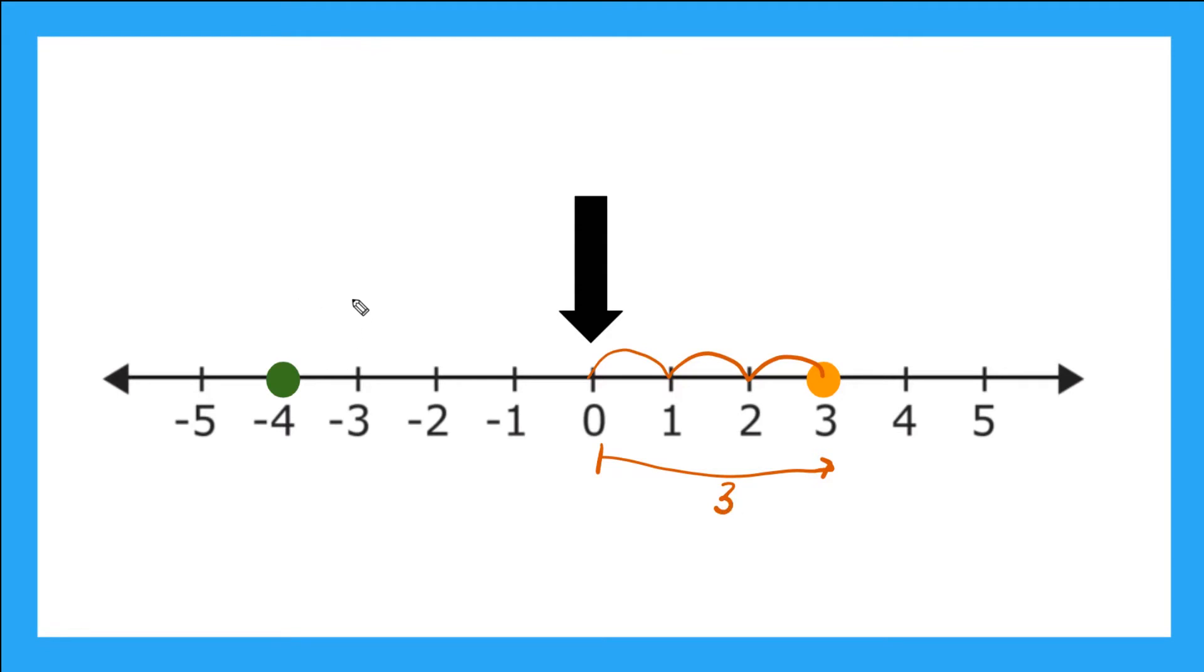Now how about for negative four? What's the distance from zero to negative four? Well, we need to go over one, two, three, four places to get to negative four. So the distance from zero all the way over to negative four is equal to four.